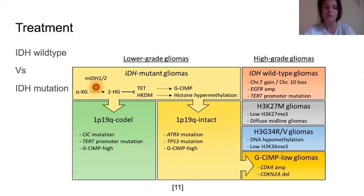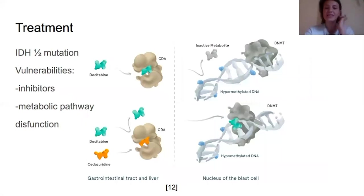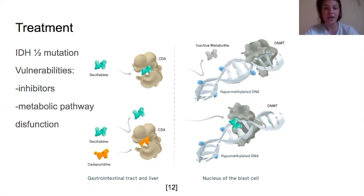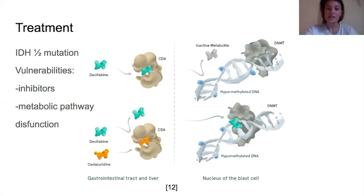For example, decitabine is a DNA methyltransferase inhibitor intended to correct the hypermethylation process by partially restoring CTCF binding. This stops constitutive expression of platelet-derived growth factor receptor A and suppresses cell proliferation in IDH1 and IDH2 mutated gliomas. The dysfunction of the new metabolic pathways formed from mutant IDH1 — such as new synthesis of NAD and histone hypermethylation — is one of the main reasons patients with the mutant type typically see better outcomes.